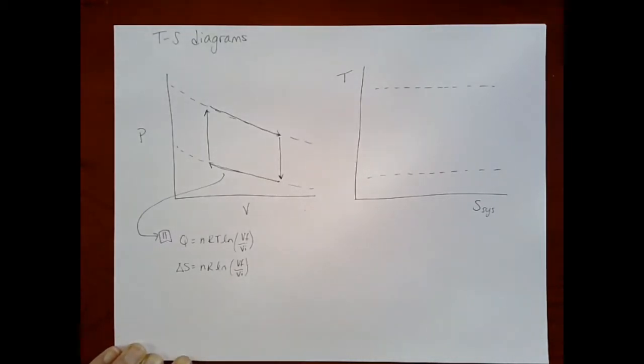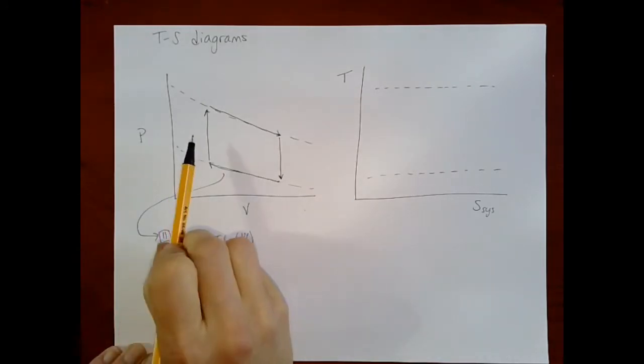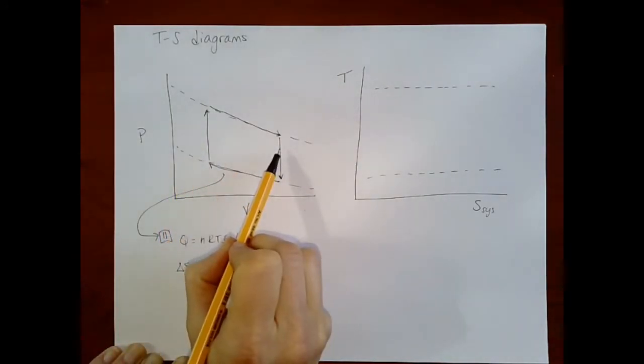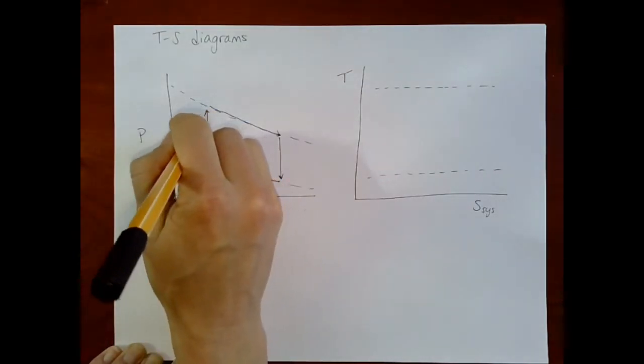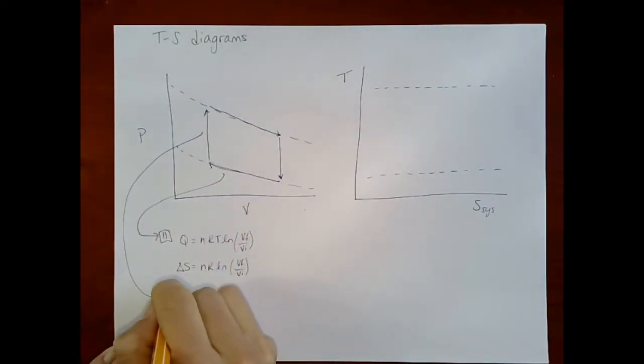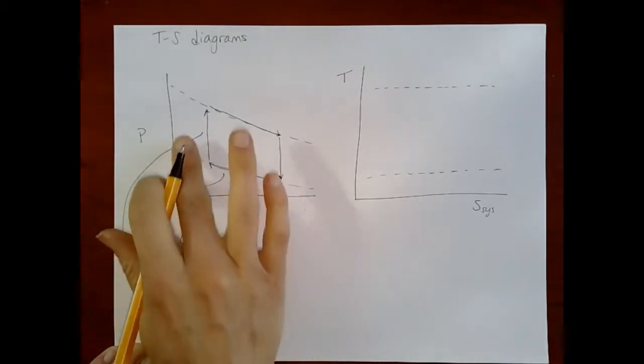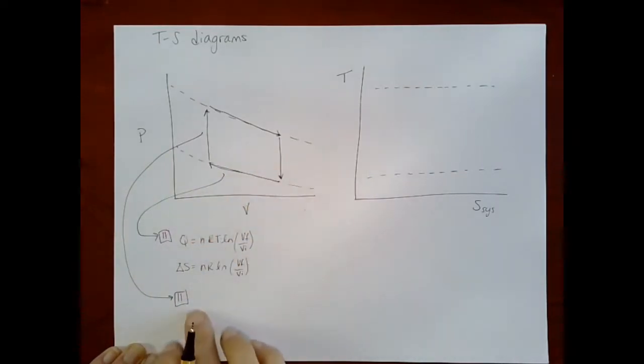Alright, so why don't you take a moment to pause and make sure that you can calculate the entropy for these two constant volume steps. Okay, unpausing. For these two steps, I'm actually going to go back a step in the derivation from where I started here. We derived earlier in class that dq for a constant volume process is equal to Cv dT.